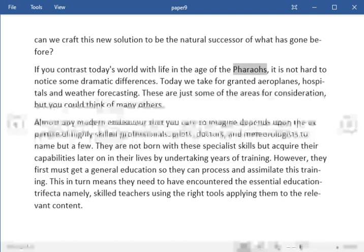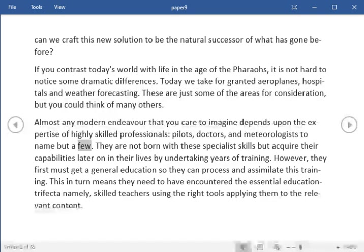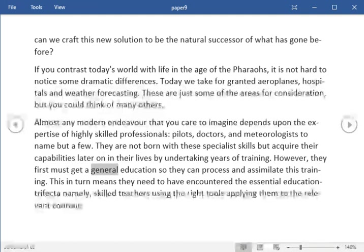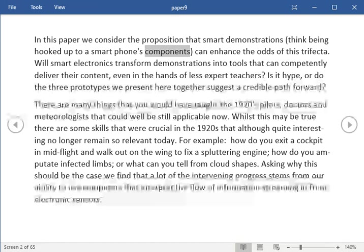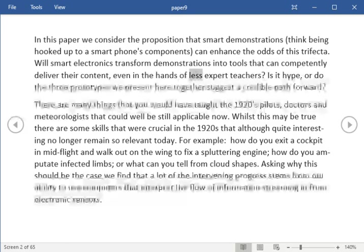If you contrast today's world with life in the age of the Pharaohs it is not hard to notice some dramatic differences. Today we take for granted aeroplanes, hospitals and weather forecasting. Almost any modern endeavor that you care to imagine depends upon the expertise of highly skilled professionals, pilots, doctors, and meteorologists to name but a few. They are not born with these specialist skills but acquire their capabilities later on in their lives by undertaking years of training. However, they first must get a general education so they can process and assimilate this training. This in turn means they need to have encountered the essential education trifecta namely, skilled teachers using the right tools applying them to the relevant content. In this paper we consider the proposition that smart demonstrations think being hooked up to a smartphone's components can enhance the odds of this trifecta. Will smart electronics transform demonstrations into tools that can competently deliver their content even in the hands of less expert teachers? Is it hype or do the three prototypes we present here together suggest a credible path forward?